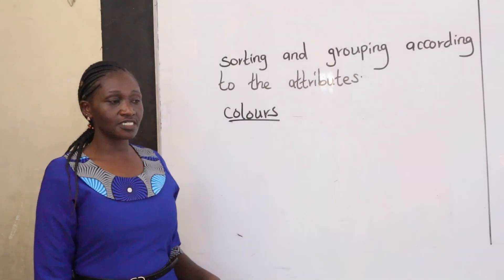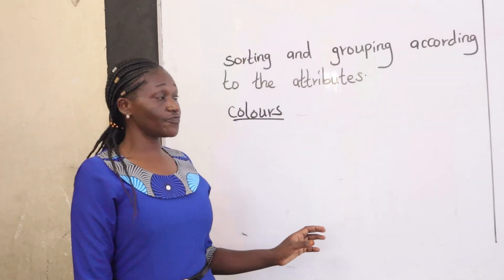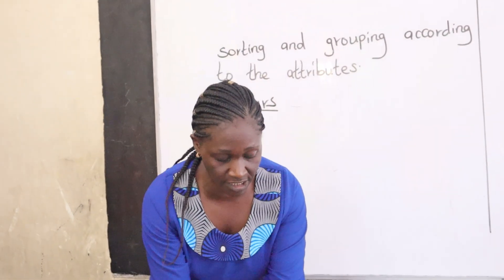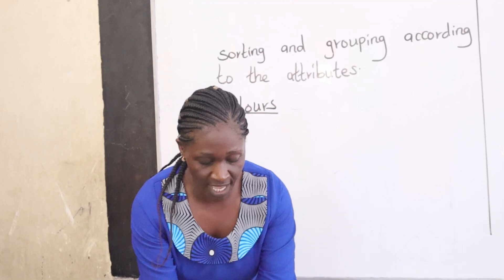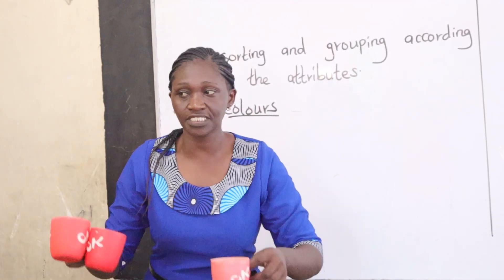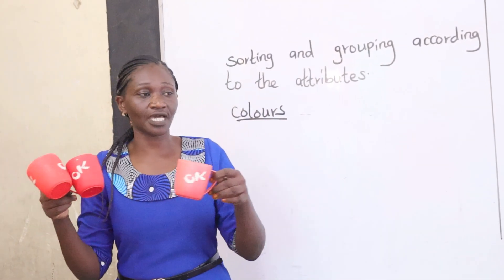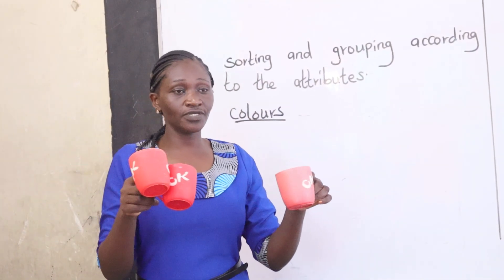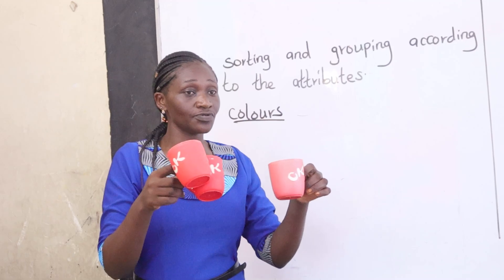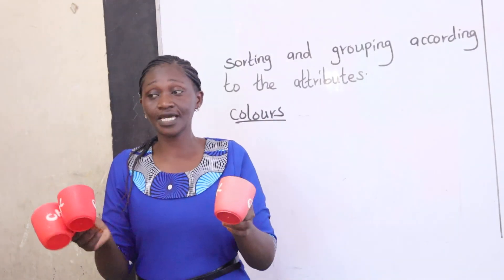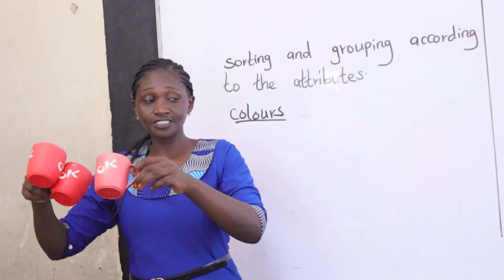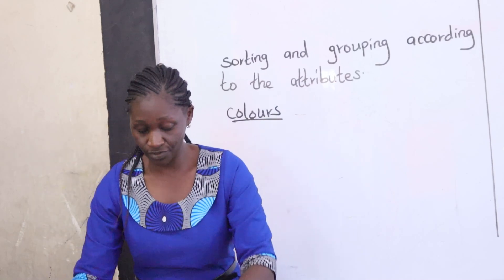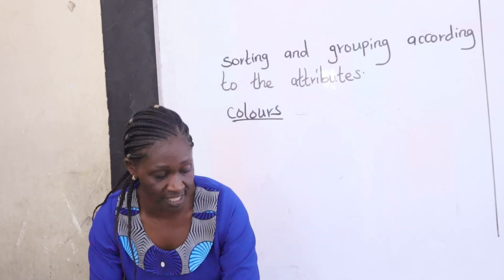Now we have learned about colors, and we want to see how we use these items — the different uses. We have these ones: these are caps. What do we use caps to do? We use these caps to drink tea. So we just put these caps together because we use them the same way.